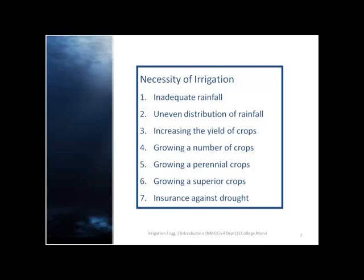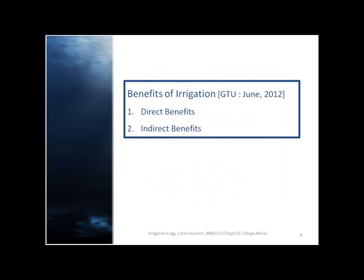The necessities of irrigation include: inadequate rainfall, uneven distribution of rainfall, increasing the yield of crops, growing a number of crops, growing perennial crops, growing superior crops, and insurance against drought.